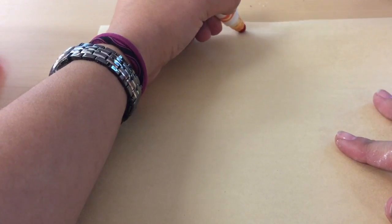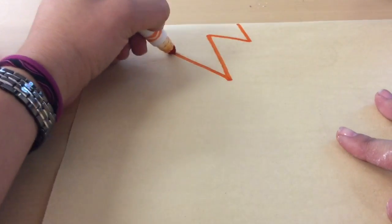Using the markers, you're going to draw different types of lines across the paper. I'm going to start with a zigzag line.